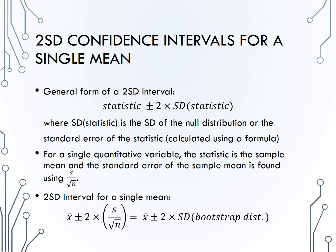The first that we'll discuss is the 2SD method or the simulation method. The general form of a 2SD confidence interval is to take your statistic plus or minus 2 times the standard deviation of the statistic. Where the standard deviation of the statistic is either the standard deviation of the simulated null distribution or the calculated standard error of the statistic which we find using a formula.